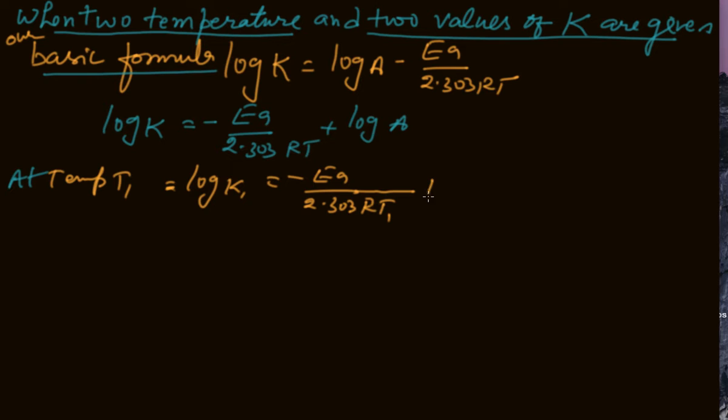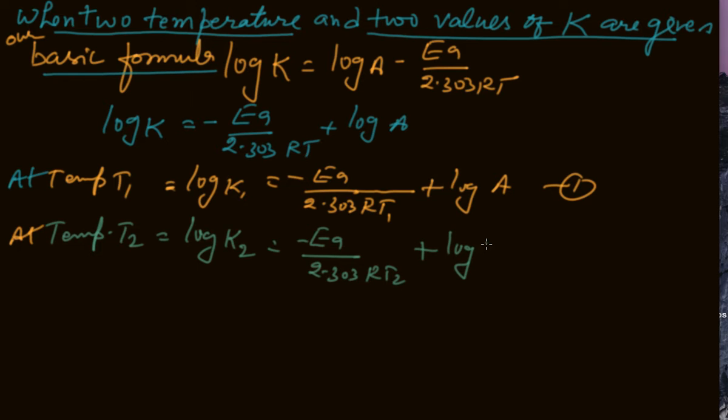plus log A. This is equation number 1. At temperature T2: log K2 equals minus Ea upon 2.303 RT2 plus log A. Log A is the intercept and value will remain constant. This is equation number 2.